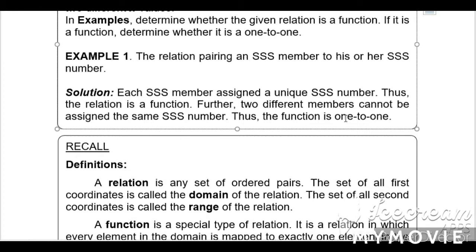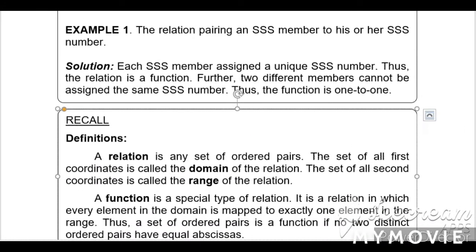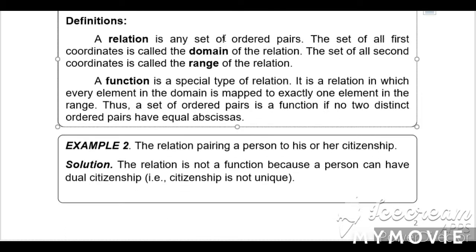When we say function, it is one paired to one. Recall the definitions for relation and function. A relation is any set of ordered pairs. The set of all first coordinates is called the domain of the relation. The set of all second coordinates is called the range of the relation. A function is a special type of relation — a relation in which every element in the domain is mapped to exactly one element in the range.